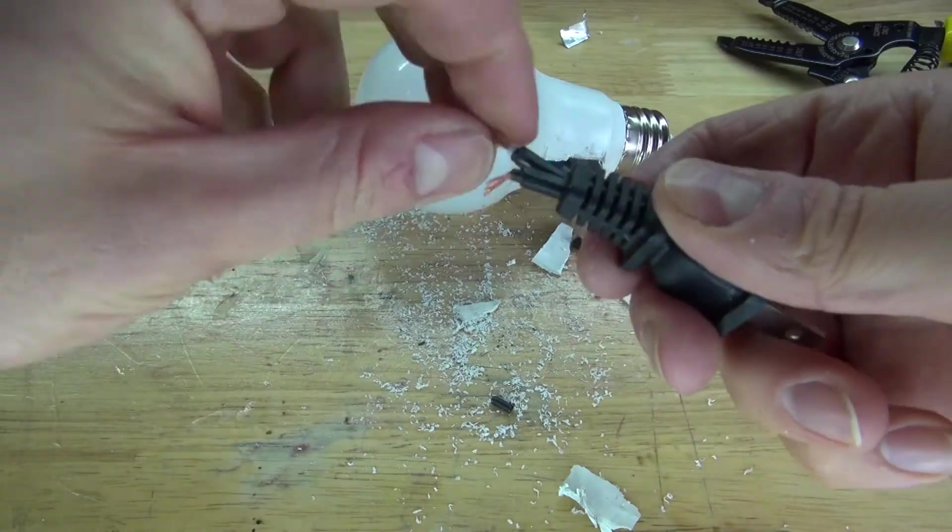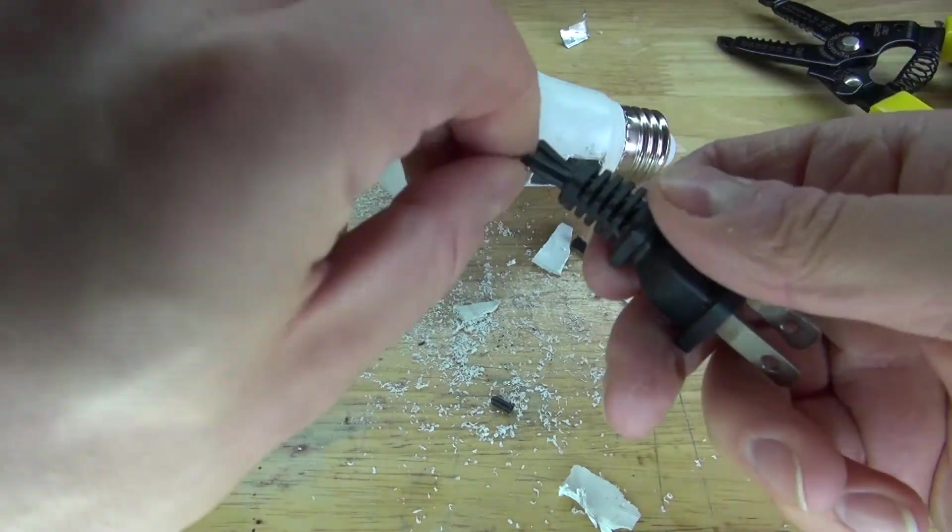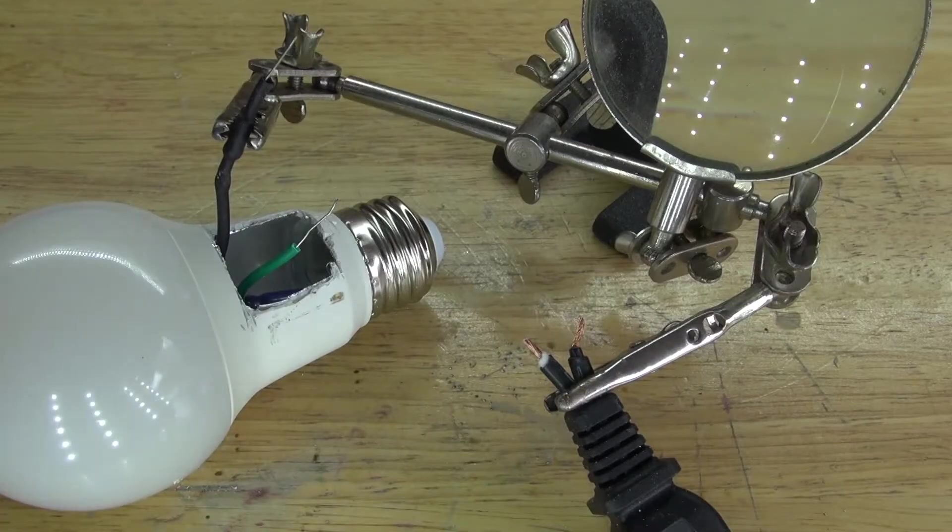Twist the wires. Next solder tin all four wires.